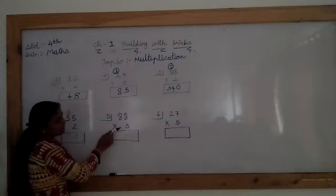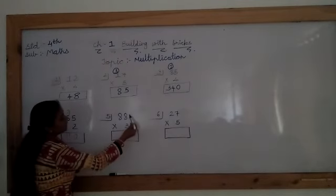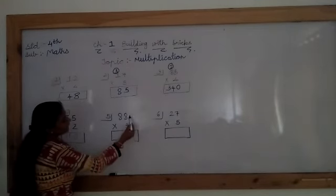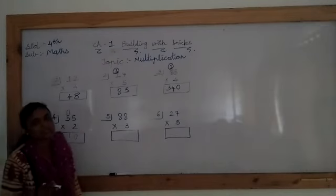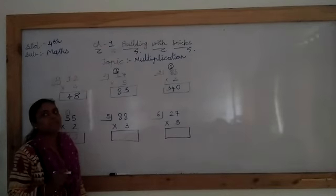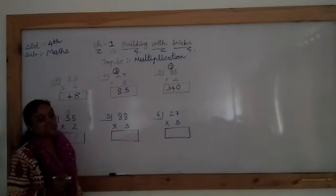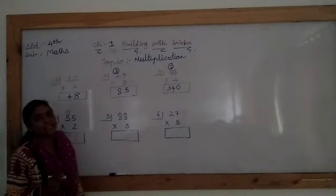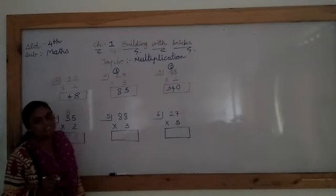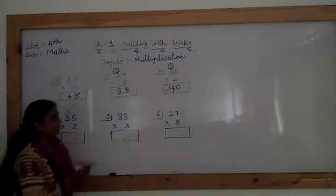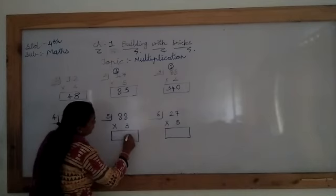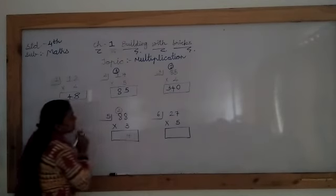Next is 18 threes up. Yes. Here, again start from right side. 8 threes up. So for that, which table we have to speak? Yes, 8. Yes. 8 ones up? Very good, 8. 8 twos up? Yes, 16. 8 threes up? Correct, 24. So 4, we have to write down side and 2 we have to carry here.